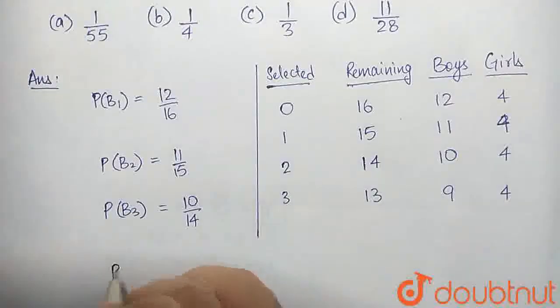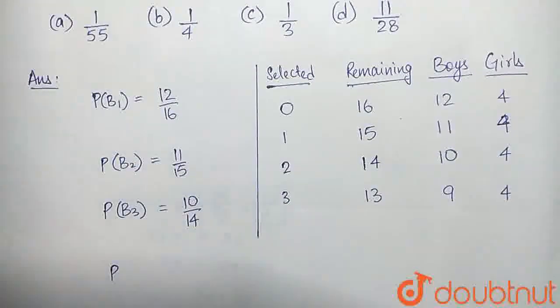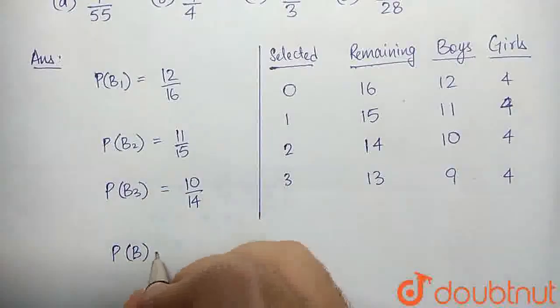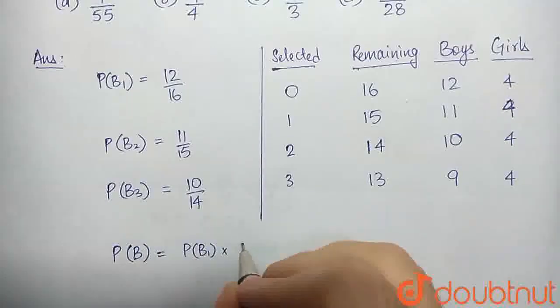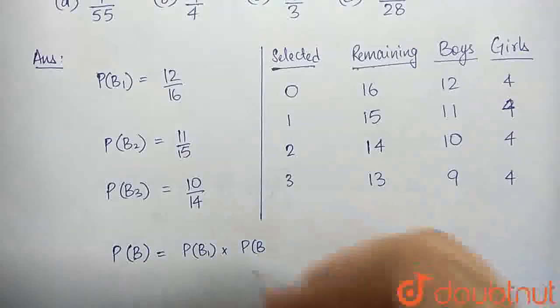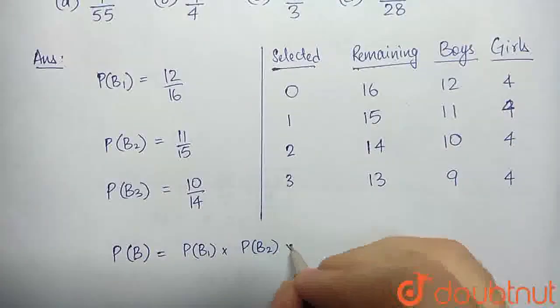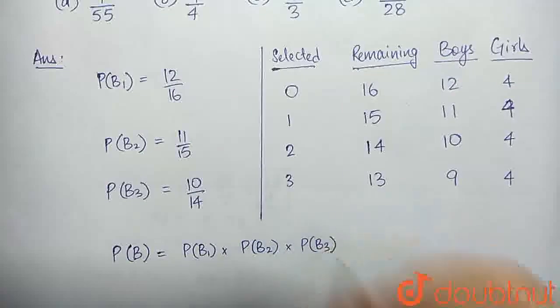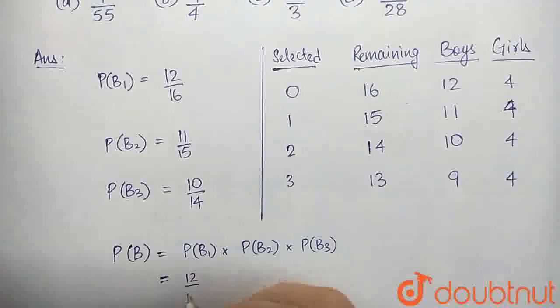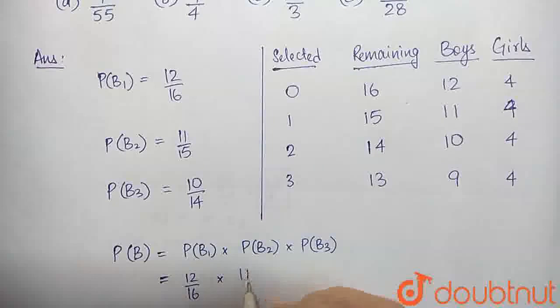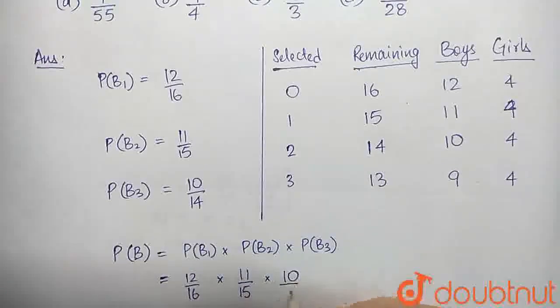Now, the probability that all 3 of these events occurs, the probability of all of them being boys - let that probability be B. That that event be B, and the probability of that event would be P(B). So, P(B) is nothing but the product of all 3 events' probabilities: P(B1) into P(B2) into P(B3). We know the values of all 3.